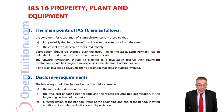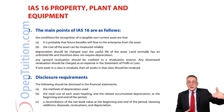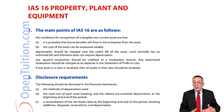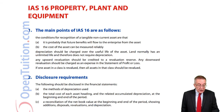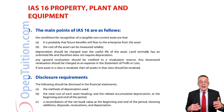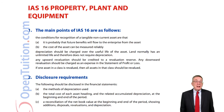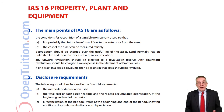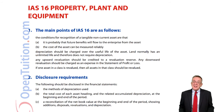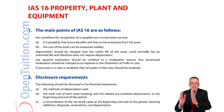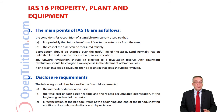A reconciliation of the net book values at the beginning and end of the period is required — we need to explain why they've changed. The cost will have changed because we've bought more assets or sold assets. The accumulated depreciation will have changed because we've charged depreciation and removed depreciation on any assets that have been sold. In addition, if there has been a revaluation, that will obviously change the balance. So there has to be a statement showing, for each type of asset, what the change has been in the cost and accumulated depreciation over the year.